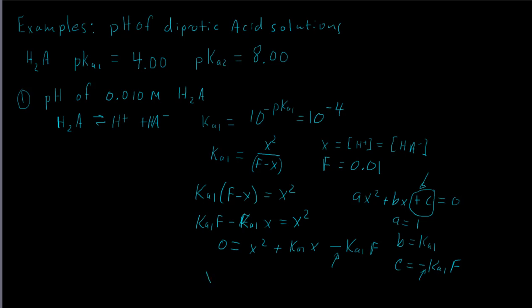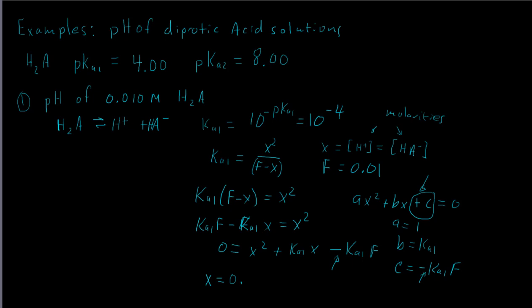Solving the quadratic gives two roots, and we take the positive root because you can't have negative molarities. Punching it into a calculator or using an online quadratic solver, the positive root works out to be 0.0009513.